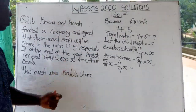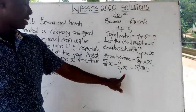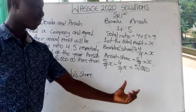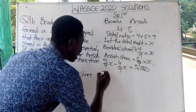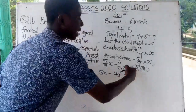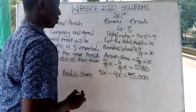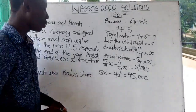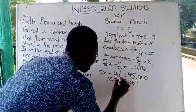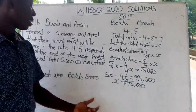The LCM of the denominators is 9. Multiplying through by 9 gives 5x − 4x = 45,000, so x = 45,000 Ghana cedis. This means the total profit was 45,000 Ghana cedis.